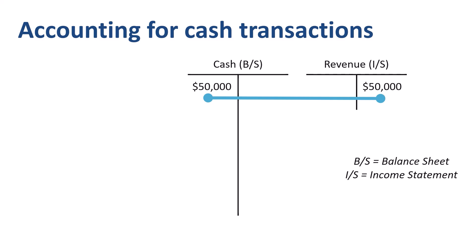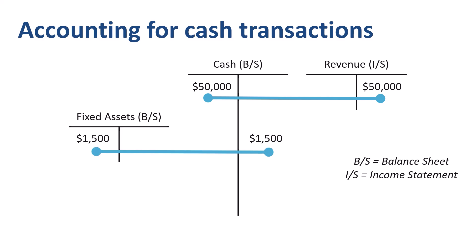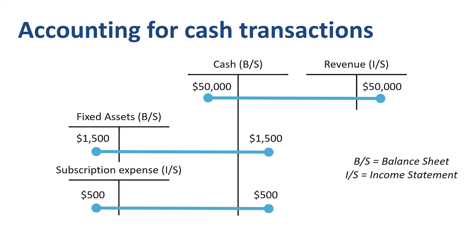During the year, the company's owner bought a new laptop for $1,500. A laptop is something the company owns that is going to be used for multiple years. Debit fixed assets, credit cash, for $1,500 each. Both of these accounts are on the balance sheet. The company also paid for a new newspaper subscription. For the moment, this gets recorded as an expense: debit subscription expense for $500, credit cash for $500.